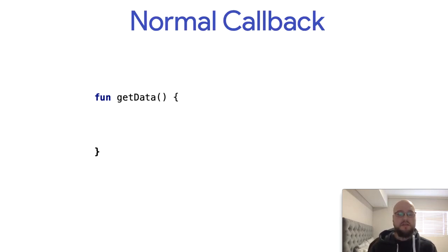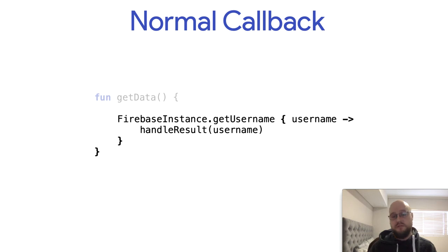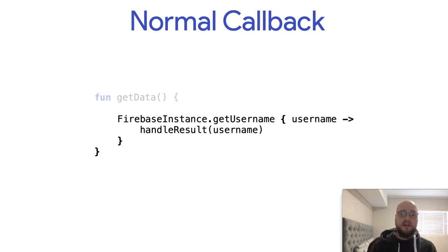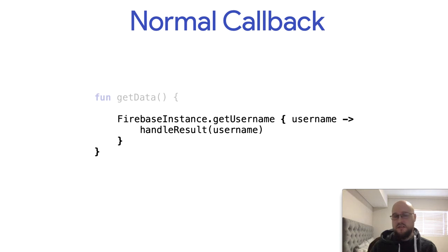Let's look at some code examples. First, a normal callback approach — I'm trying to avoid RxJava here so we're using Firebase, which a lot of people know. You have some operation, in this case getting a user's username. This is a fairly standard pattern: you have an instance or library, you call get username, and you pass in a lambda block. Inside the lambda you've got the return value — the username — and then handle result is just our local function for handling it.